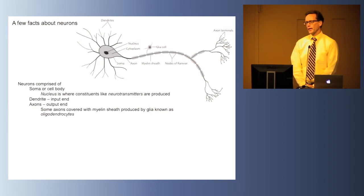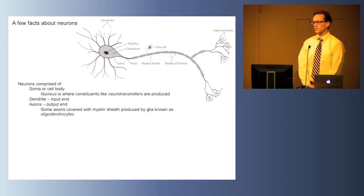But each cell body has one axon, the output end, coming out of it, and the axon can connect with other parts of the nervous system, with muscles, or with glands.